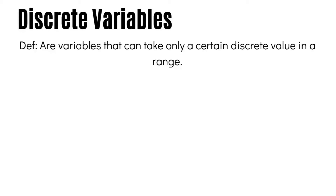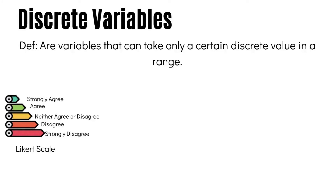Discrete variables are any variables that can take only certain values in a given range and are therefore countable in a finite amount of time. A good example is a Likert rating scale, commonly used in psychology research questionnaires. This is a discrete variable because responses can only take certain discrete values — for example, strongly agree, neither agree nor disagree, or strongly disagree.